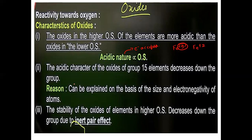The acidic character of the oxides decreases as we go down Group 15, because as we go down the group the size of the elements increases. The stability of the oxides of elements in higher oxidation state also decreases down the group.